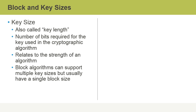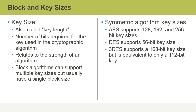Block algorithms can support multiple key sizes, but usually they have a single block size. Looking at some symmetric algorithm examples: AES supports 128, 192, and 256-bit key sizes. DES supports 56-bit keys. Triple DES supports a 168-bit key size, but in practice it's really equivalent to 112 bits.